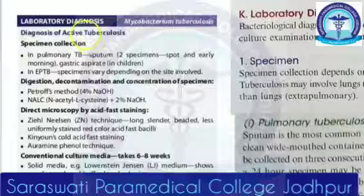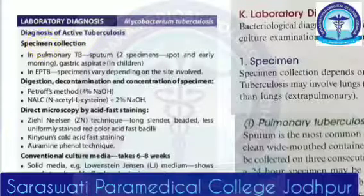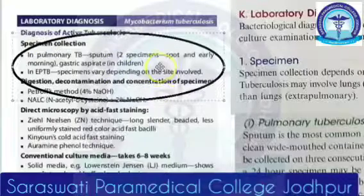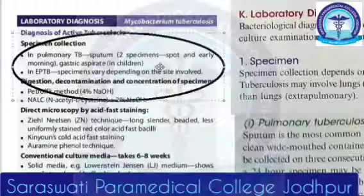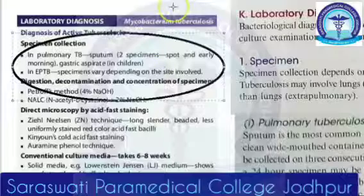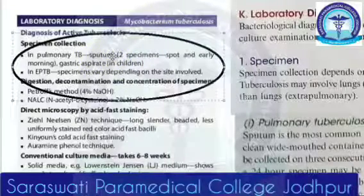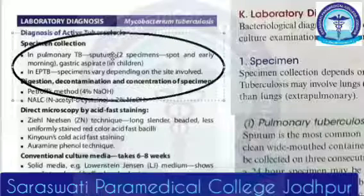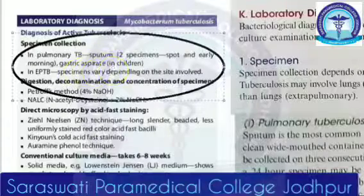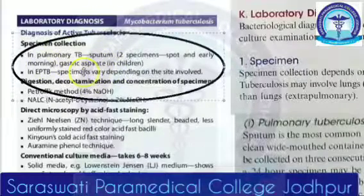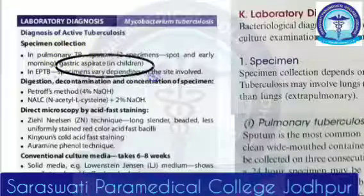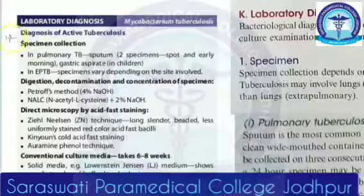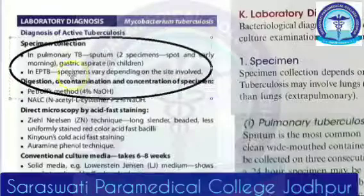Whenever they ask you a lab diagnosis, you will first tell specimen collection. For pulmonary tuberculosis, you will collect sputum — two sputum samples: one will be spot sputum and the other one will be early morning sputum. But for children, because they swallow sputum, you cannot collect sputum. Hence you will do a gastric aspirate.